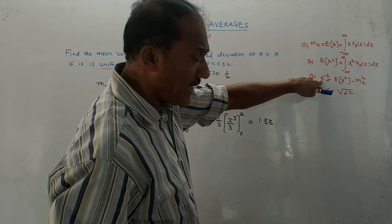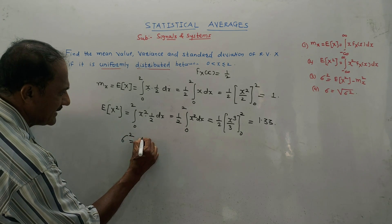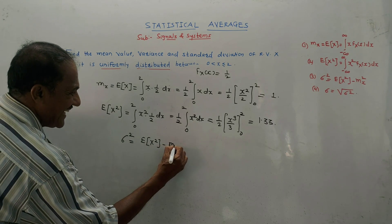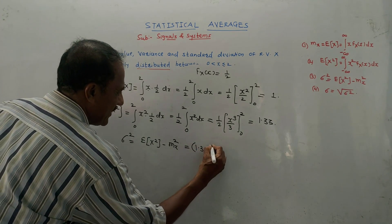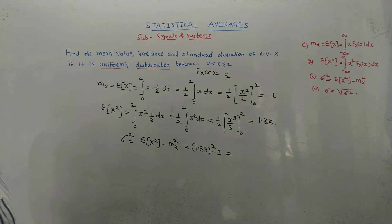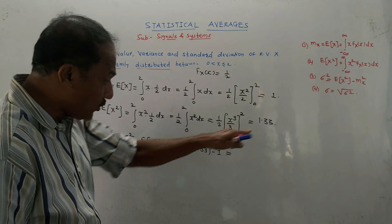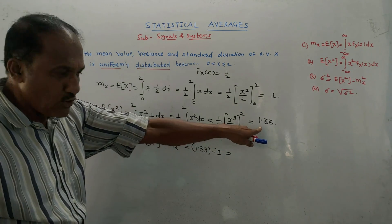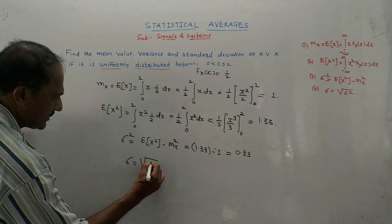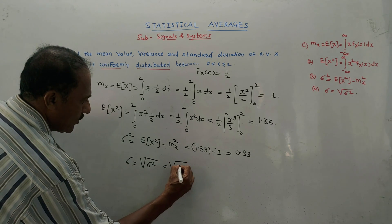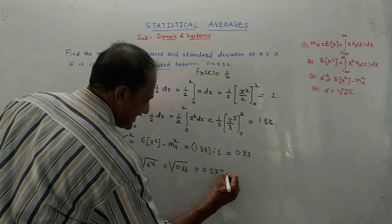Next, calculate variance sigma square. Variance is sigma square equals E of x square minus mx square. E of x square is 1.33 and mx square is 1 squared equals 1. So sigma square equals 1.33 minus 1 equals 0.33. Last step: standard deviation is square root of sigma square, so square root of 0.33 equals 0.5773.